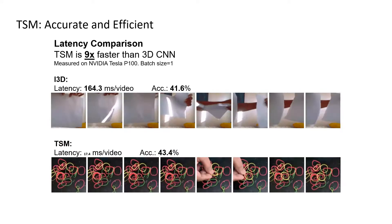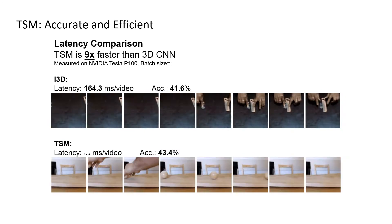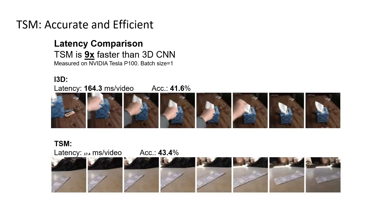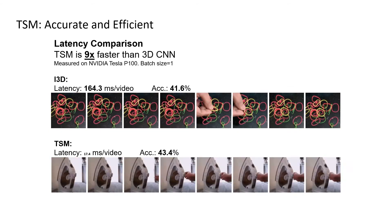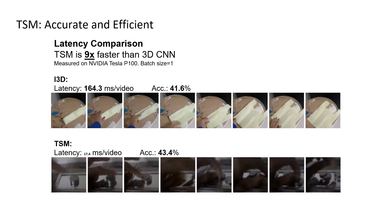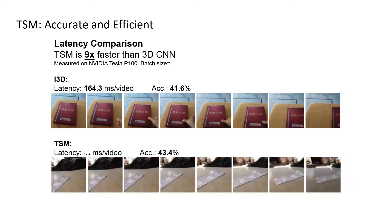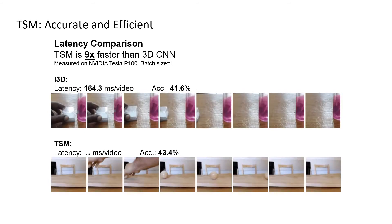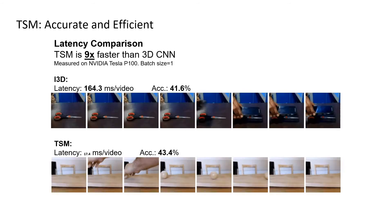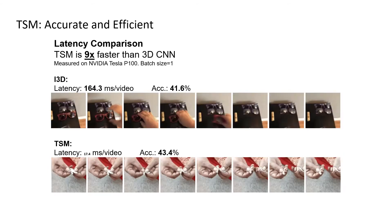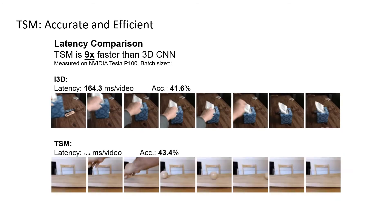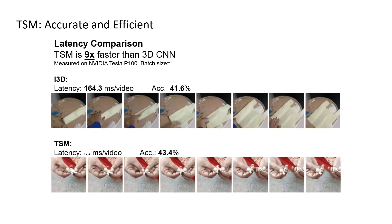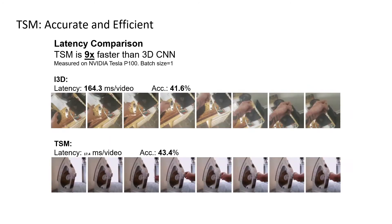TSM offers several unique advantages. Firstly, TSM has high performance — it ranks first on the Something-Something leaderboard. Secondly, TSM has high efficiency — it achieves real-time video recognition on mobile, and enables large-scale Kinetics training on 100 GPUs in only 15 minutes.